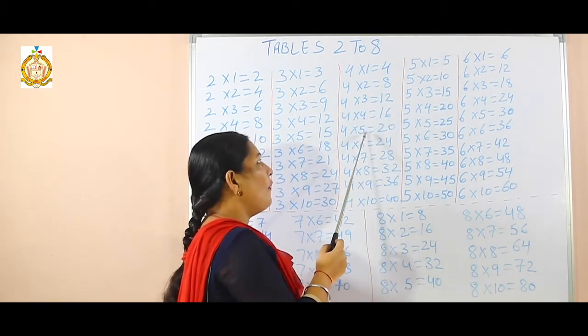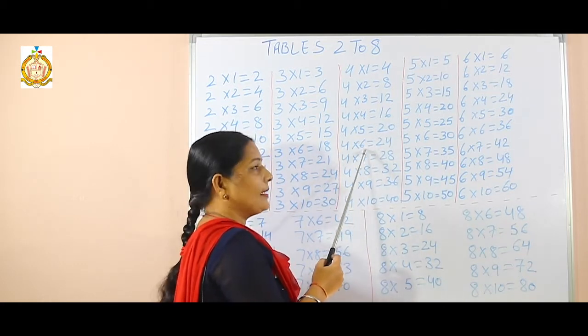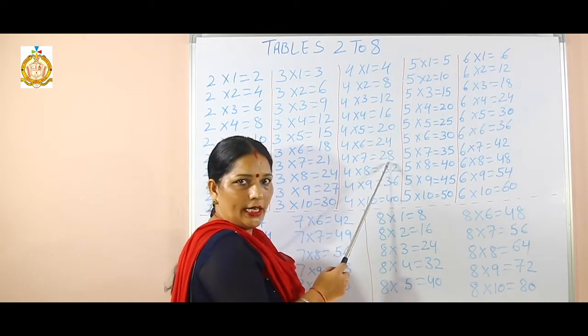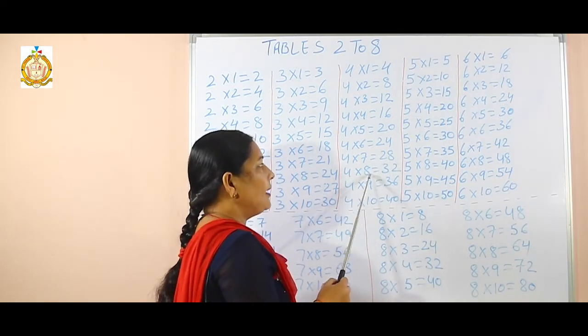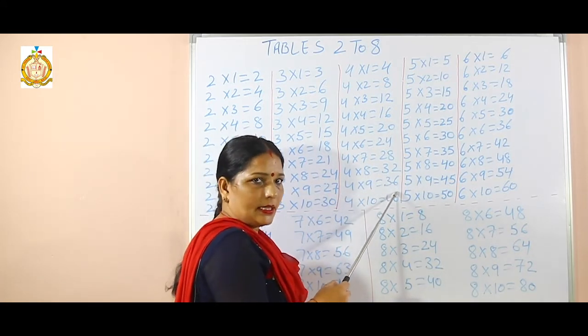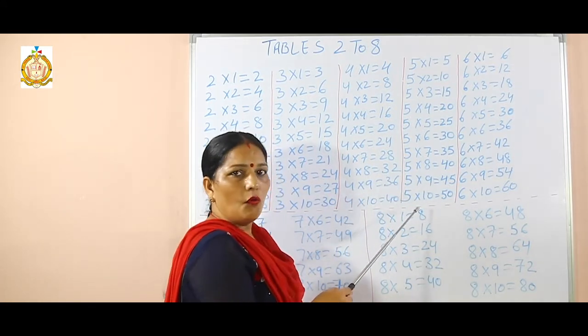4 fives are 20, 4 sixes are 24, 4 sevens are 28, 4 eights are 32, 4 nines are 36, 4 tens are 40.